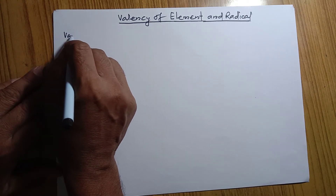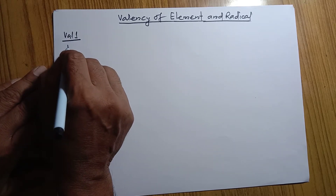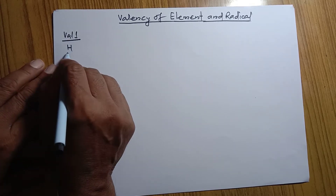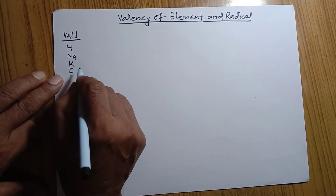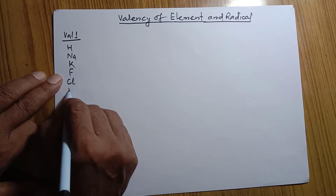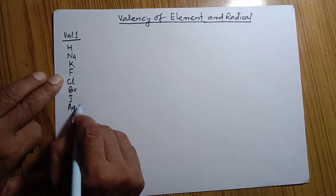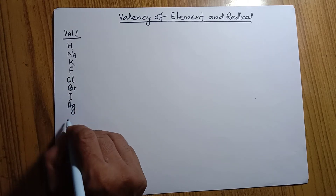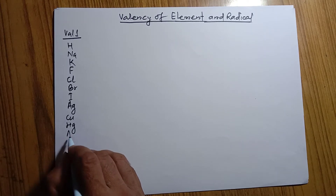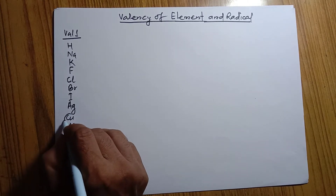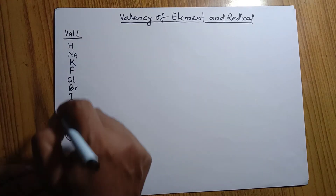Valency 1. What are the elements having valency 1? They are hydrogen, sodium, potassium, fluorine, chlorine, bromine, iodine, silver, and others also — copper, mercury, and gold. These elements have valency 1.